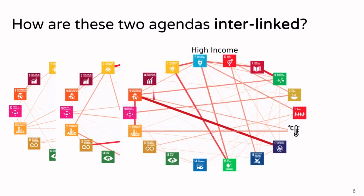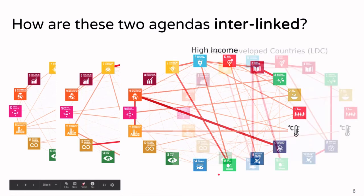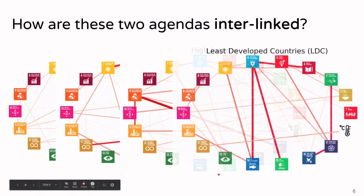When we look at high income countries, we see a slightly different picture. Here, industrialization and infrastructure (SDG 9) is quite central — quite strongly connected to partnerships for the goals (SDG 17). There are also other connections, such as affordable and clean energy (SDG 7) to life on land (SDG 15).